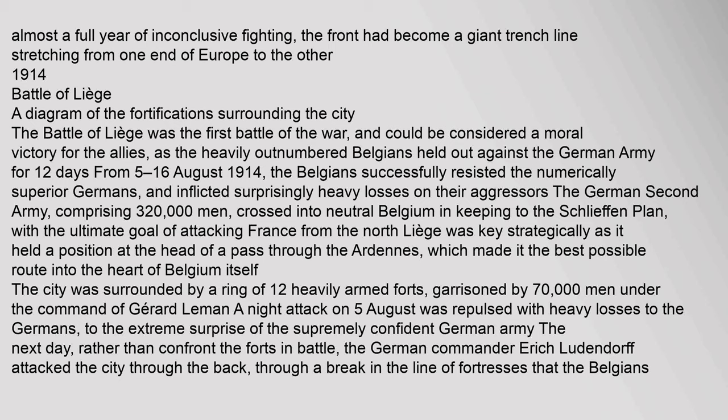1914: Battle of Liege. A diagram of the fortifications surrounding the city. The Battle of Liege was the first battle of the war, and could be considered a moral victory for the Allies, as the heavily outnumbered Belgians held out against the German army for 12 days, from 5–16 August 1914. The Belgians successfully resisted the numerically superior Germans and inflicted surprisingly heavy losses on their aggressors. The German Second Army, comprising 320,000 men, crossed into neutral Belgium in keeping to the Schlieffen Plan, with the ultimate goal of attacking France from the north.